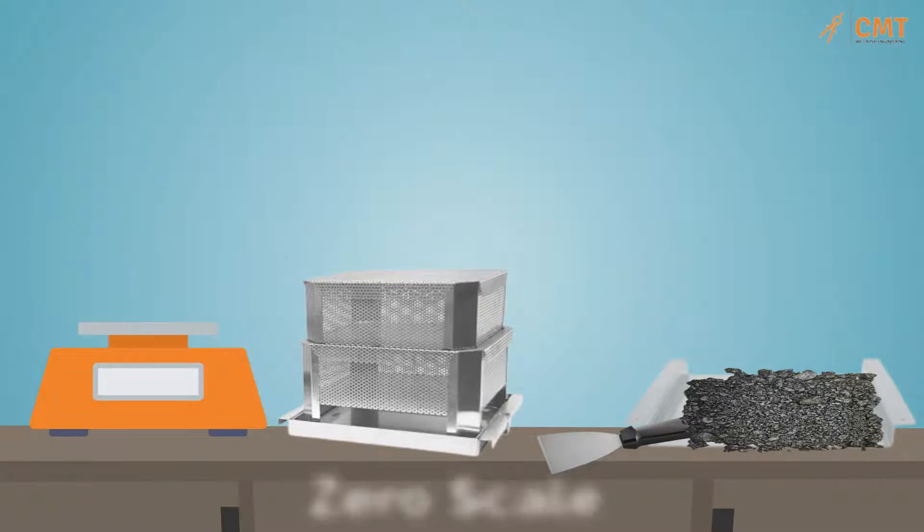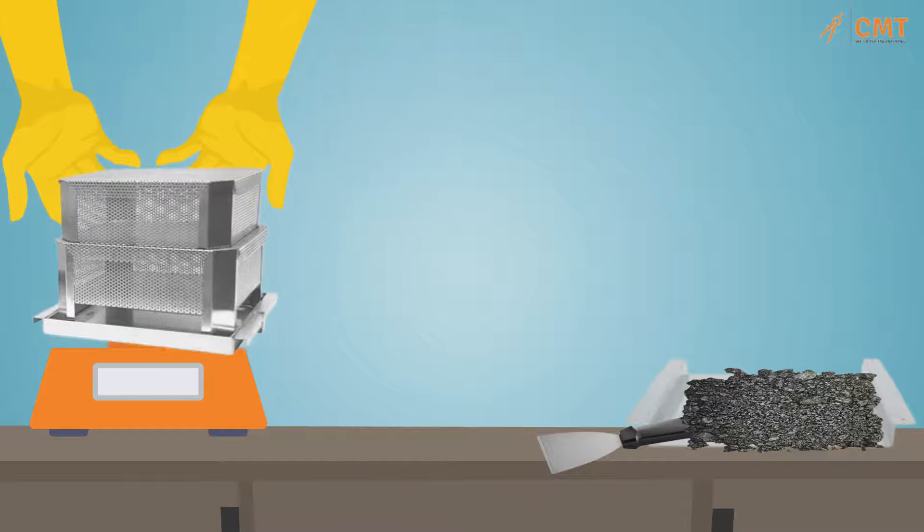Zero out an external scale and place the basket assembly on the scale platform. Record the mass of the empty basket assembly, then remove it from the scale.